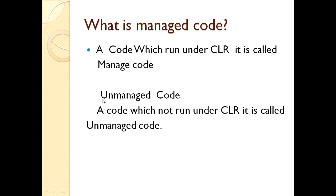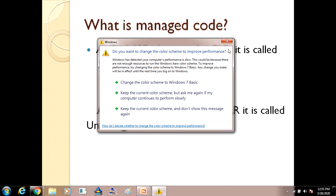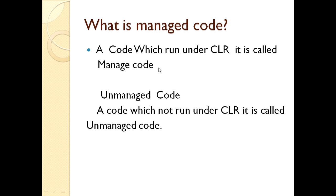And what is the definition of unmanaged code? A code which does not run under CLR is called unmanaged code. All .NET languages such as C#.NET, VB.NET and others have their own compiler, and after that there is a CLR compiler. Code that runs in CLR is managed code; otherwise, a language like VB that does not run in CLR is called unmanaged code. Simply: code which runs under CLR is managed code, and code which does not run under CLR is unmanaged code.